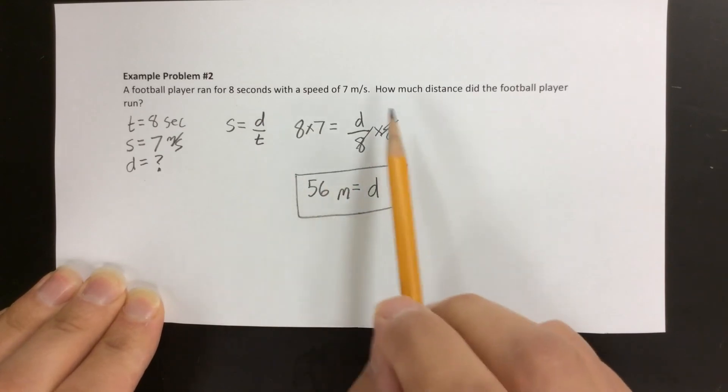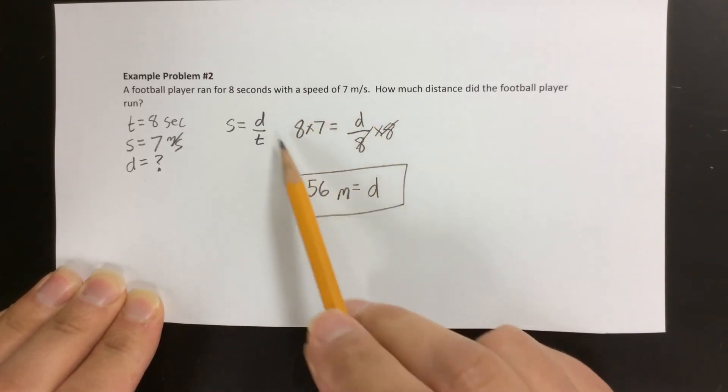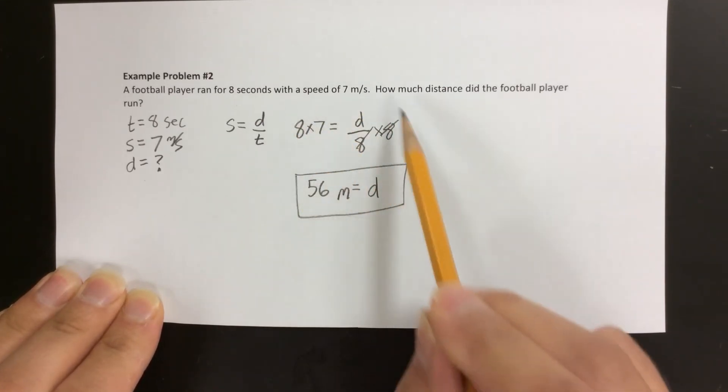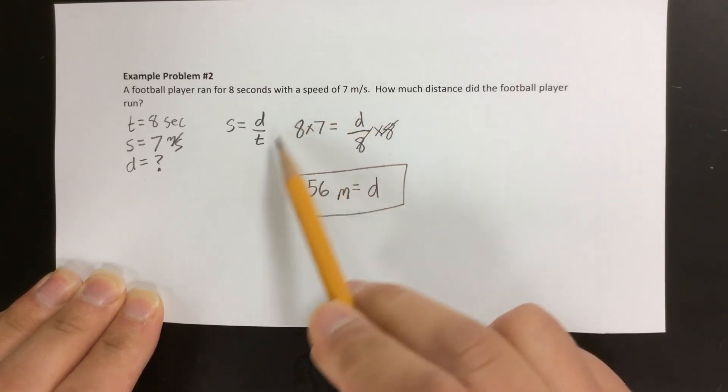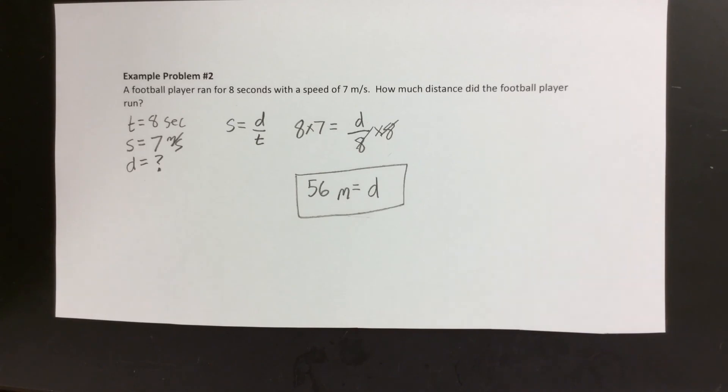But the thing that's different from the first problem is this part right here. You have to show that you multiplied both sides by 8. You can't just do it in your head - you have to show on the paper that you multiplied both sides by 8. So that's our second example problem.